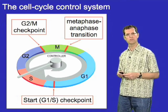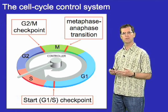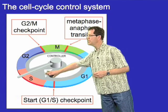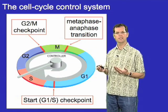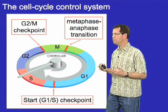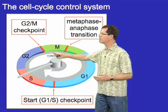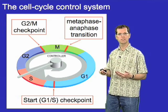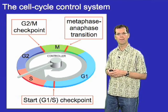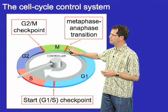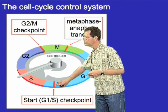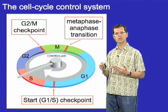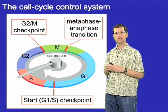There are three major transitions or so-called checkpoints in the cell cycle where this timer can be arrested if conditions are not appropriate. For example, if the timer initiates S phase but DNA synthesis fails and a chromosome fails to duplicate, that will send a message back to the controller blocking progression through the G2/M checkpoint, preventing entry into mitosis if chromosomes are not fully duplicated. There are similar mechanisms at the metaphase-anaphase transition and at the start or G1/S checkpoint — at all these checkpoints it's possible to arrest the timer if certain previous events are not carried out successfully.